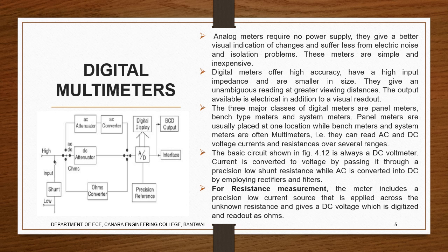There are three major classes of digital meters: panel meters, bench type meters, and system meters. Panel meters are usually placed at one location like a display. Bench meters and system meters are usually multimeters. They can read both AC and DC voltage, current, and resistance at several ranges. You don't need different meters; all are built in and combined into one system.